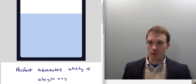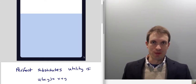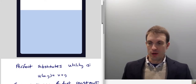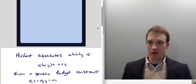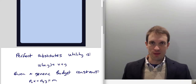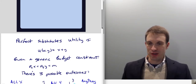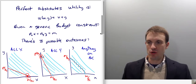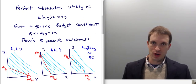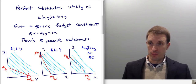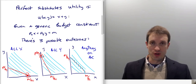With perfect substitutes utility, our utility is coming from our consumption of good X and good Y, and it's just going to be the sum of the amounts we're consuming. I'm going to assume a generic budget constraint — expenditure on X plus expenditure on Y exhausts income. Expenditure is just the price of the good times the amount you consume. There are actually going to be three possible outcomes. My indifference curves all have to have a slope of negative one, because my marginal rate of substitution is going to be negative one.